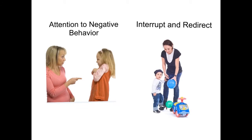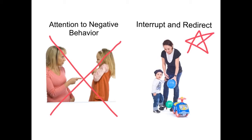If negative behaviors do occur, try not to bring attention to them. Yelling 'no' or showing your frustration allows a child to gain attention for their negative behavior. Instead, try to interrupt and redirect by asking a choice question and react in a very neutral way. For example, say: "Did you want to use the blue or green ball? Should we play basketball or catch?"